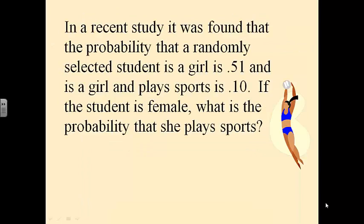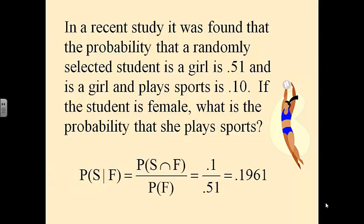In a recent study, it was found that the probability that a randomly selected student is a girl is 0.51. The probability that the randomly selected student is a girl and plays sports is 0.10. If the student is female, what's the probability she plays sports? It's very important to identify what's A and what's B. We're asked to find the probability that she plays sports given she's female. The probability of female and plays sports is 0.10, the probability of just female is 0.51, so the conditional probability is those two divided by each other.